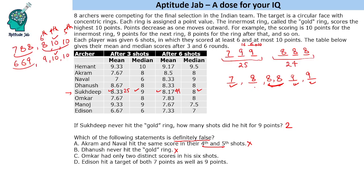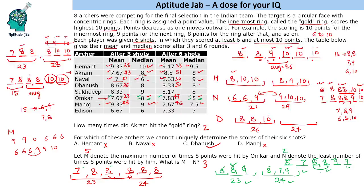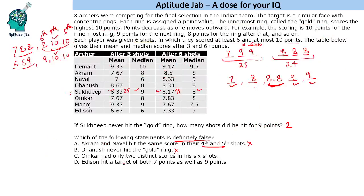Option C: Omkar had only two distinct scores in his six shots. Recalling a case from the Omkar analysis, we derived that he could score only seven and eight points across all six shots. So this is not definitely false — it is actually possible.